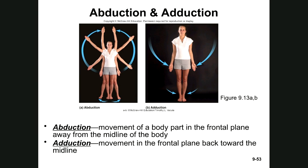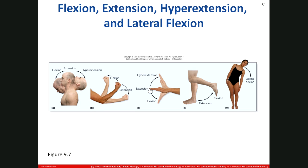Hyperextension occurs when a joint is extended more than 180 degrees — for example, raising the back of the hand while the arm is extended (hyperextending the wrist), or glancing up at the ceiling while standing (hyperextending the neck). Lateral flexion occurs when the trunk of the body moves in the coronal plane laterally away from the body, primarily between the vertebrae in the cervical and lumbar regions of the vertebral column.